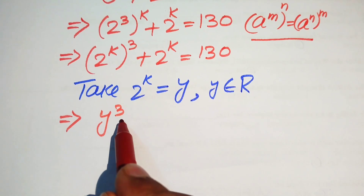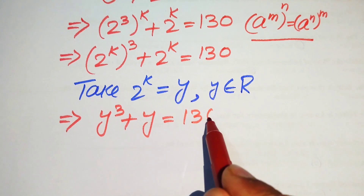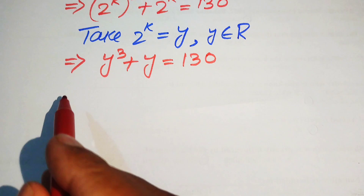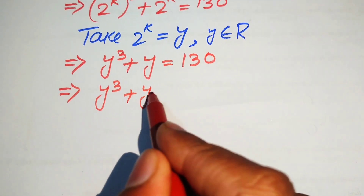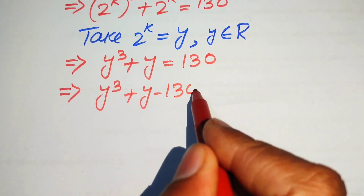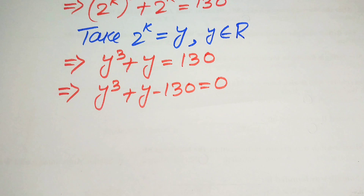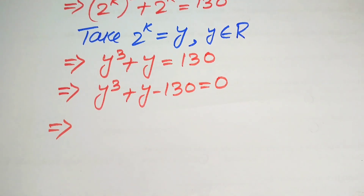When we substitute this value of y in the above equation, our equation is written as y cubed plus y equals 130. Now in the next step, we move 130 to the left hand side, and it will be written as y cubed plus y minus 130 equals 0. Further, we find the values of y by factorization.